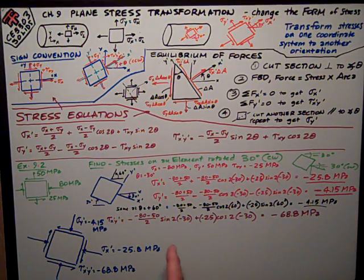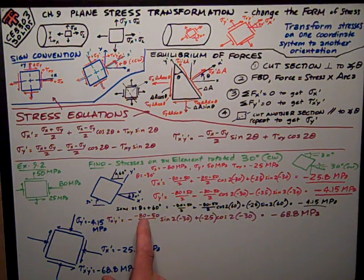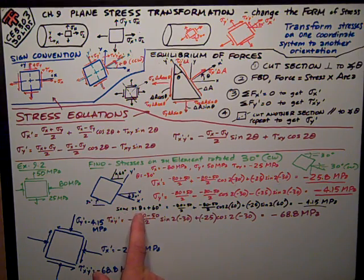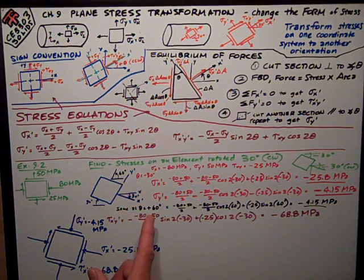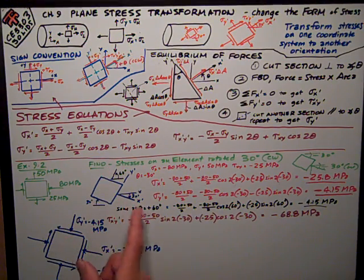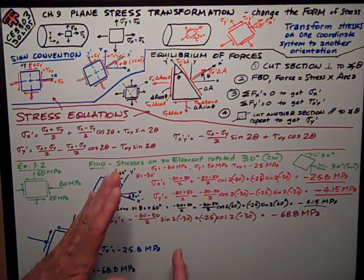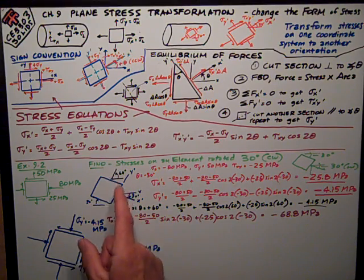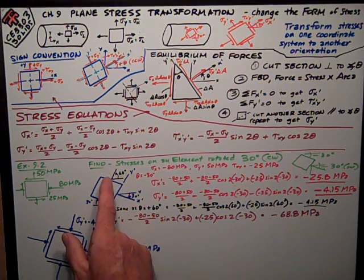It's interesting to note here, as he does in the example, the sigma y prime is the same for negative 30 degrees rotation. It's the stress. It's the same thing I get if I rotate it counterclockwise 60 degrees, as I've shown up here.